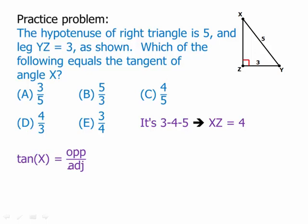And of course, tangent is opposite over adjacent. So the opposite is YZ. The adjacent is XZ. And that is 3 over 4. So it has to be answer choice E.